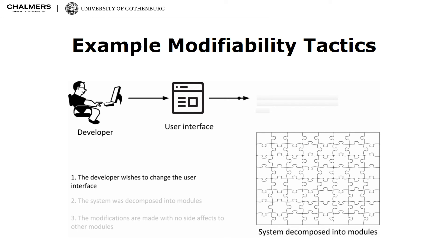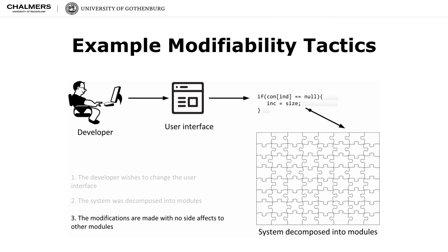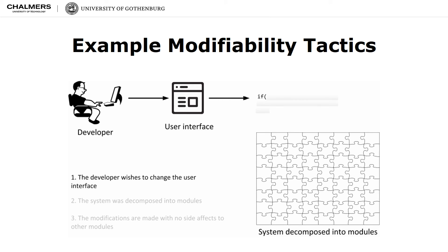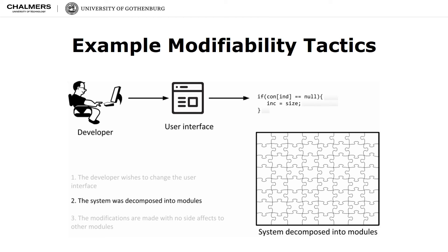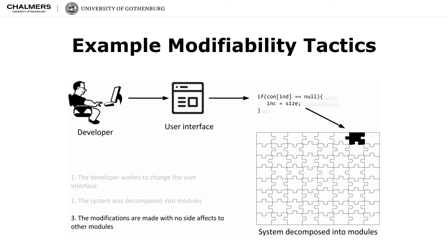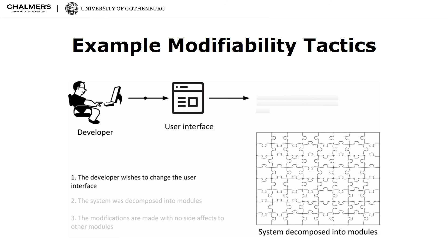Here is an example system showing modifiability tactics in action. The system at hand is being ported to a new display environment. The developer wishes to change the user interface by modifying the code at design time. The system has been designed in such a way that view components are implemented separate from other modules. This is a direct result of applying the split module tactic. In this case, it is highly probable that the modifications are made with no side effects and within a desired timeframe.